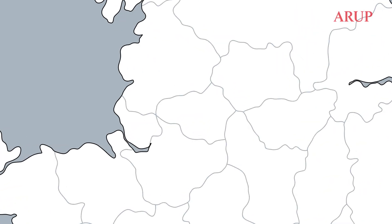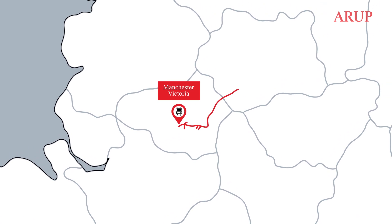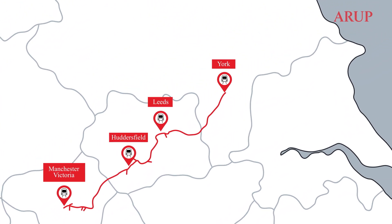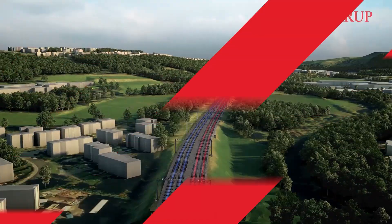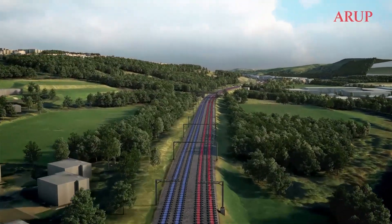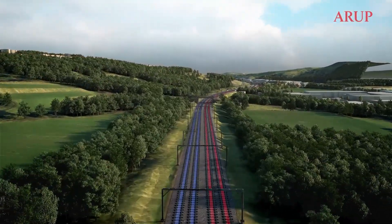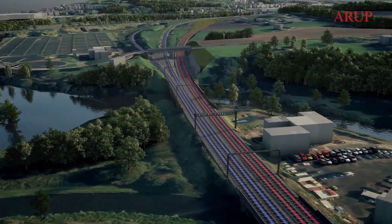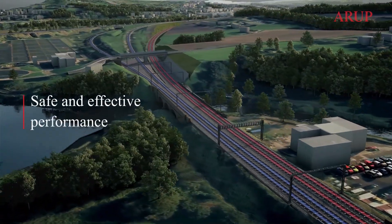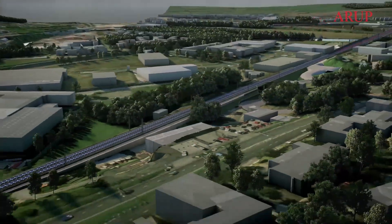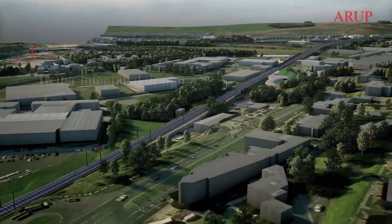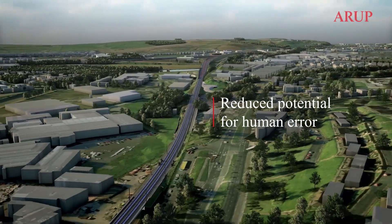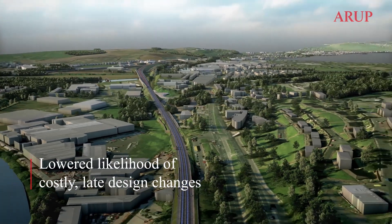We have used the Rail Signaling Visualization Tool on the Transpennine Route Upgrade project. It helped us to validate the ETCS signaling design and make any necessary adjustments to ensure that it supports drivers to deliver safe and effective performance. This tool results in better integrated design, reduces the potential for human error, and lowers the likelihood of costly late design changes.